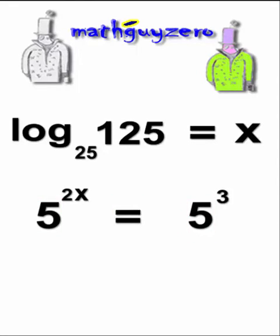So now we have the bases equal to each other. We just set the exponents equal to each other. Solve for x, divide both sides by 2. And that is our answer, three halves.